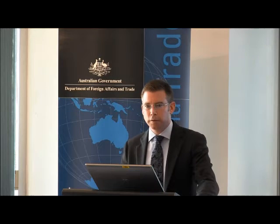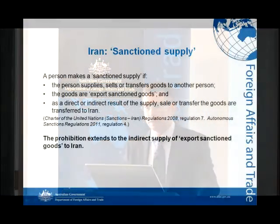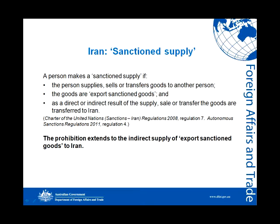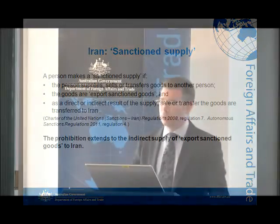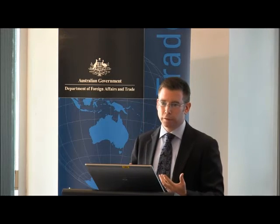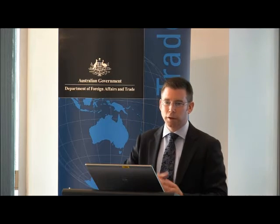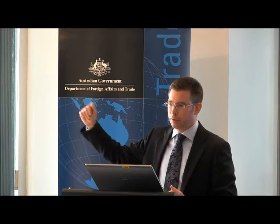Looking first at making a sanctioned supply to Iran — a prohibition that exists both in UNSC sanctions and in Australian autonomous sanctions in relation to Iran. A person makes a sanctioned supply if the person supplies, sells or transfers goods to another person, the goods are export sanctioned goods, and as a direct or indirect result of the supply, sale or transfer, the goods are transferred to Iran. Note the breadth of the prohibition — it extends to the indirect supply of goods to Iran.